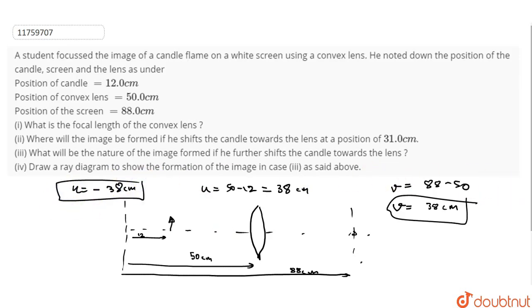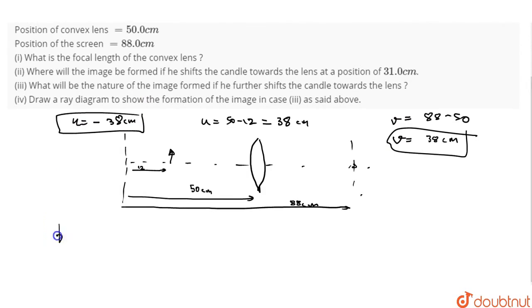The first part is asking us to find the focal length of lens. Now we know that lens formula is 1 by V minus 1 by U equals 1 by F. Applying this formula with our values of 1 by 38, we get 2 by 38.